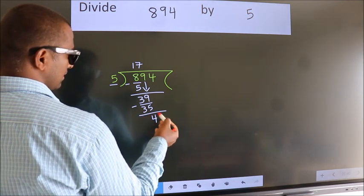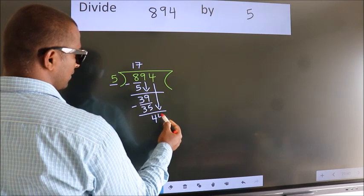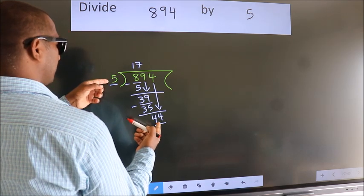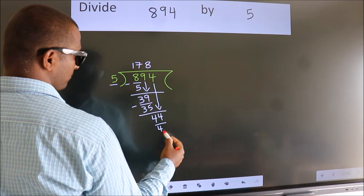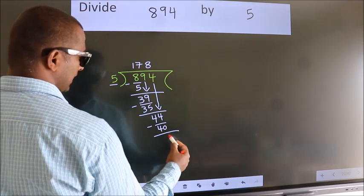After this, bring down the beside number. So, 4 down. So, 44. A number close to 44 in 5 table is 5 eights 40. Now, we subtract. We get 4.